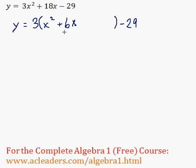Okay, now we take the 6, we divide it by 2, and we square it. So 6 divided by 2 is 3, 3 squared is 9. So 9 is the number to add and take away.